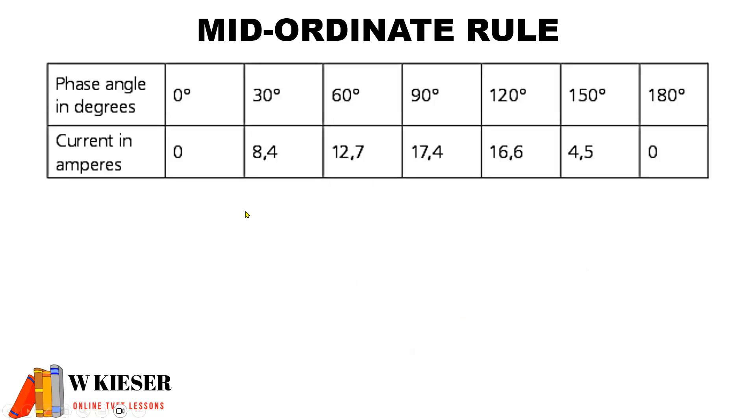If you have a look at this table, you'll see we have current at the bottom in amperes, and plotted at the top is the phase angle in degrees.